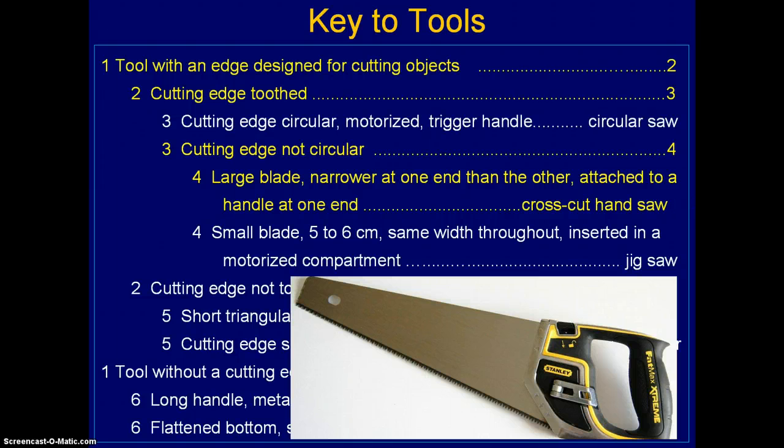You've now identified the object you set out to identify — that's basically how a key works. Once you know how to use a key like this, plant keys can be a little more complicated but the principle is the same. In the next lecture, I will show you some images of different plants and you will have a key to use to follow along and see if you can key out some of the plants.